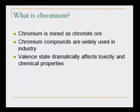What is chromium? Chromium is mined as chromite ore. Chromium compounds are widely used in industry and the valence state dramatically affects toxicity and chemical properties. Chromium-3 is not toxic if within limits; however, chromium-6 is highly toxic even in trace quantities. The same metal can thus be less toxic in one oxidation state and highly toxic in another.